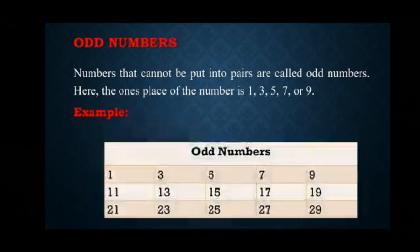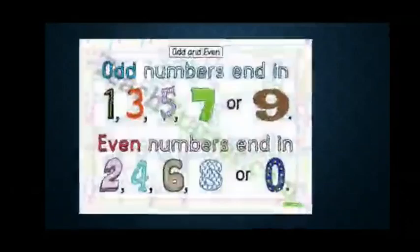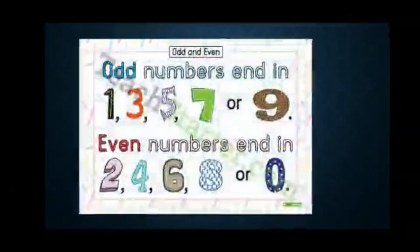So, we have to remember one thing that odd numbers always end in 1, 3, 5, 7 or 9 and even numbers always end in 2, 4, 6, 8 or 0.